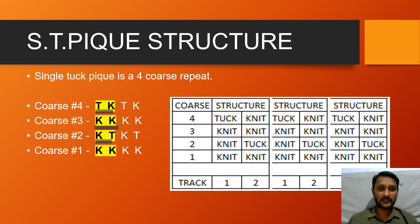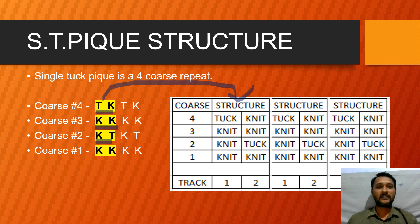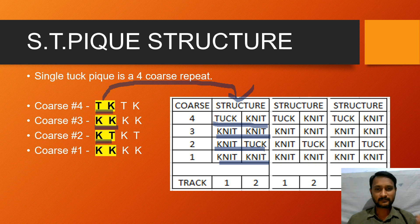I have just copied that information to an Excel: course number 1 knit-knit, course number 2 knit-tuck, course number 3 knit-knit, and course number 4 is the vice versa of course number 2, which is tuck-knit. This is the knit structure of a single tuck PQ fabric, and I have copied the same thing in successive Excel columns.